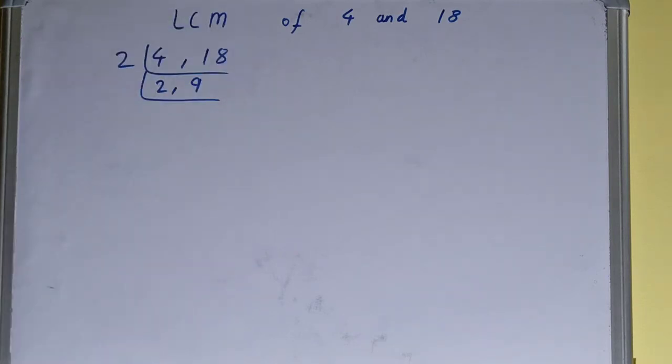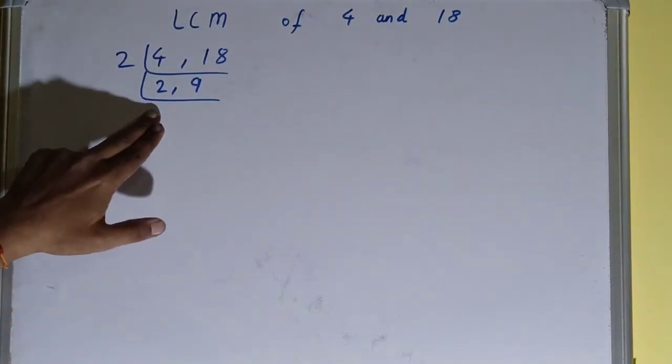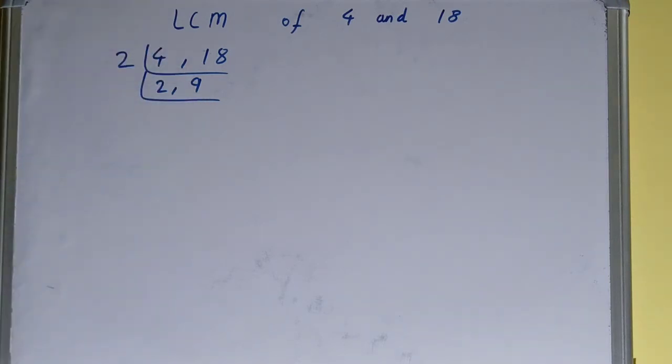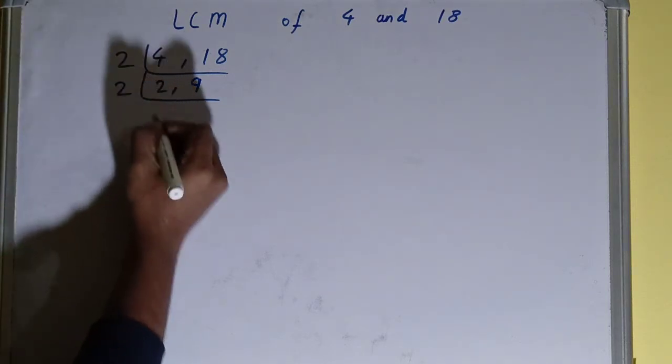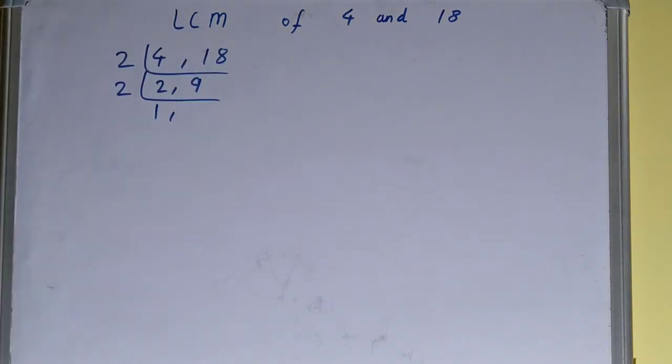Now again, if you check, only this number is divisible by 2. The other is not divisible. So even if one of the numbers is divisible, we always divide. So divide it. You will be getting 1 comma, this 9